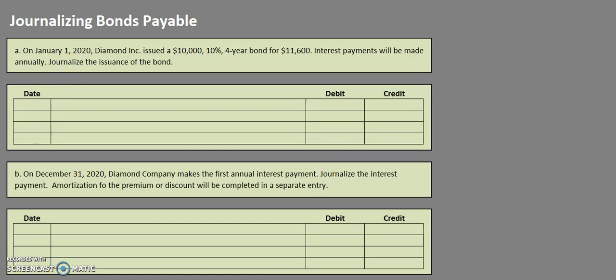Let's take a look at this first one. On January 1st, 2020, Diamond Inc. issued a $10,000 10% four-year bond for $11,600. Interest payments will be made annually and they want us to journalize the issuance of this bond. Right now what we're focused on is the face value of the bond and how much cash we are getting for this bond.